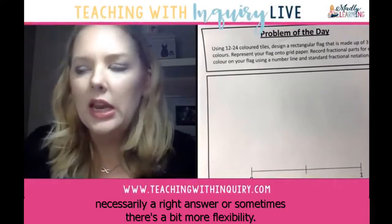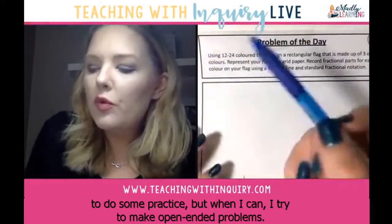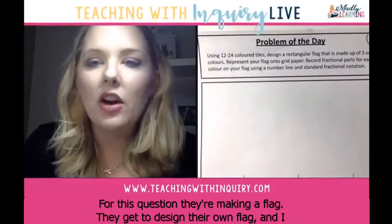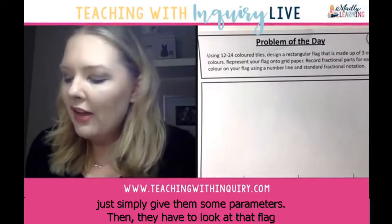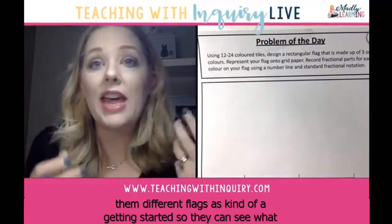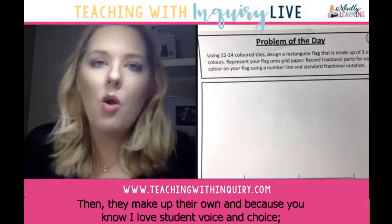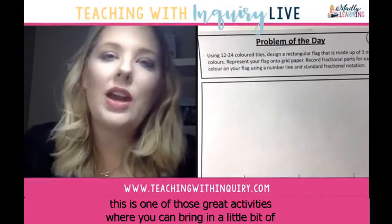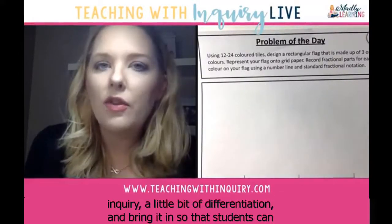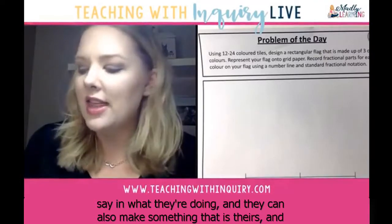On the back of the page I use a bit of inquiry with an open-ended task that has multiple entry points. There's not always a single right answer — there's more flexibility. For this activity, students make a flag: they get to design their own flag and I give them some parameters, then they look at it from a fractional perspective. I sometimes show them different flags as a getting-started activity so they can see how flags and fractions connect, and then they make their own.